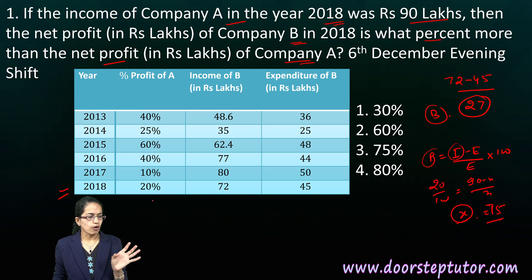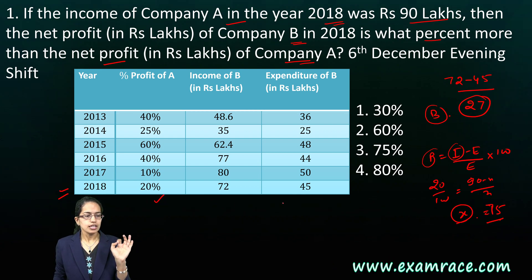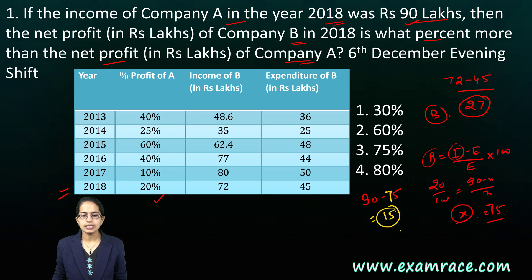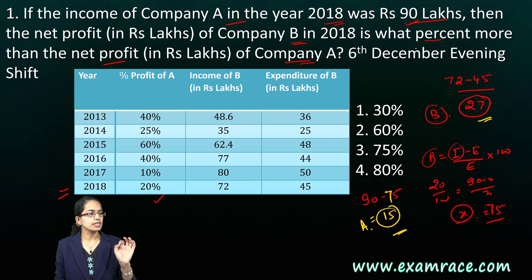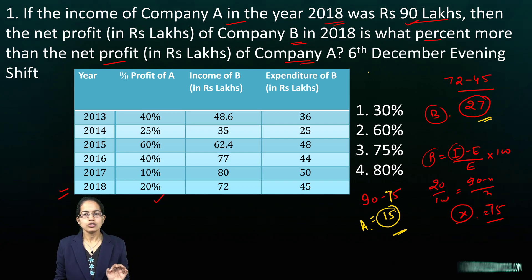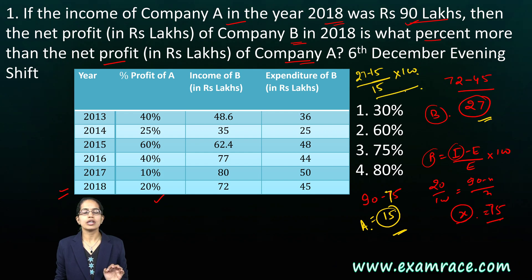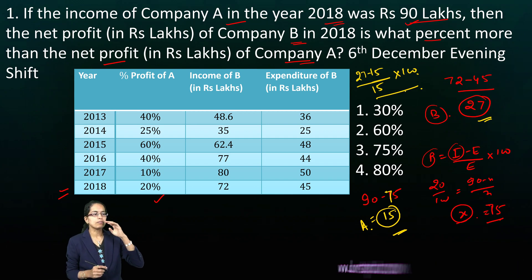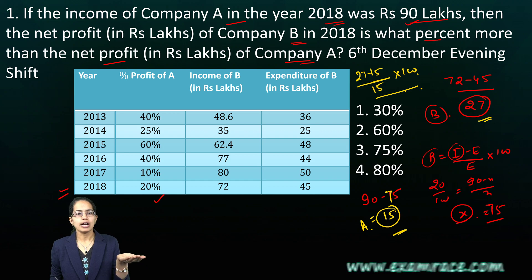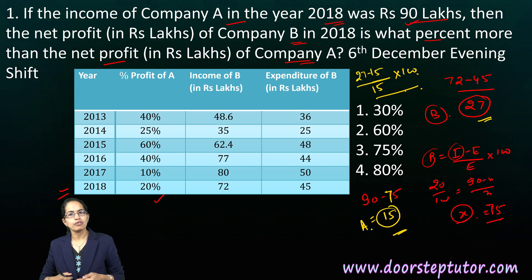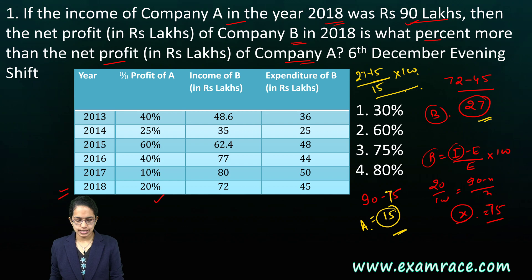The net profit for company A is income minus expenditure: 90 minus 75 equals 15 lakhs. Now, what is asked is what percent more is the net profit of company B than company A. That is (27 minus 15) divided by 15 into 100, finding what percentage of net profit is more for company B with respect to company A.